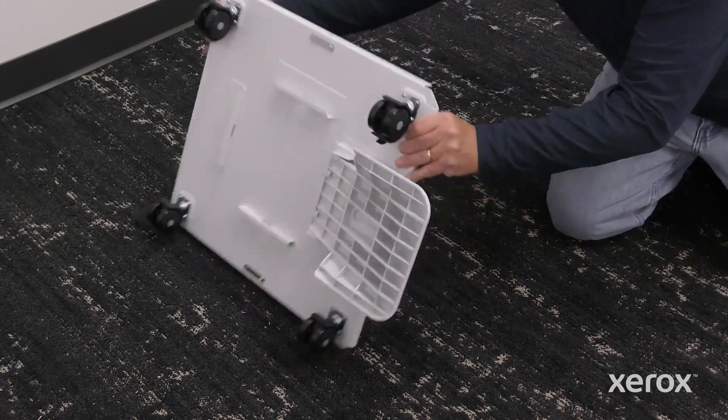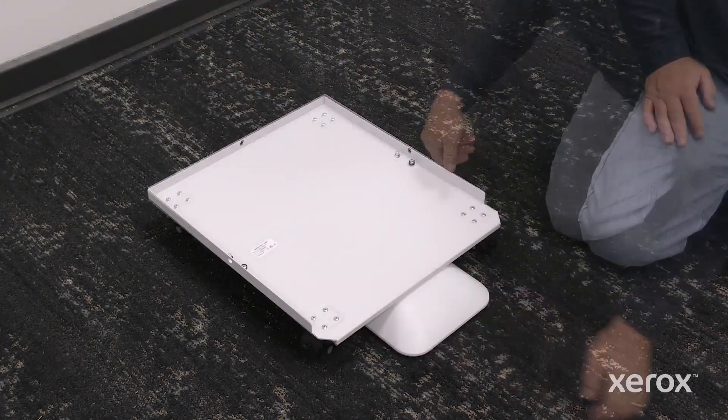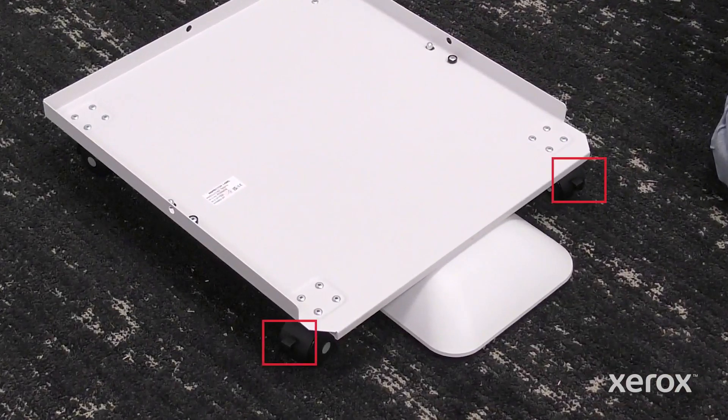Flip the stand base over so that the wheels are placed down. Push down the lever to lock the two front casters.